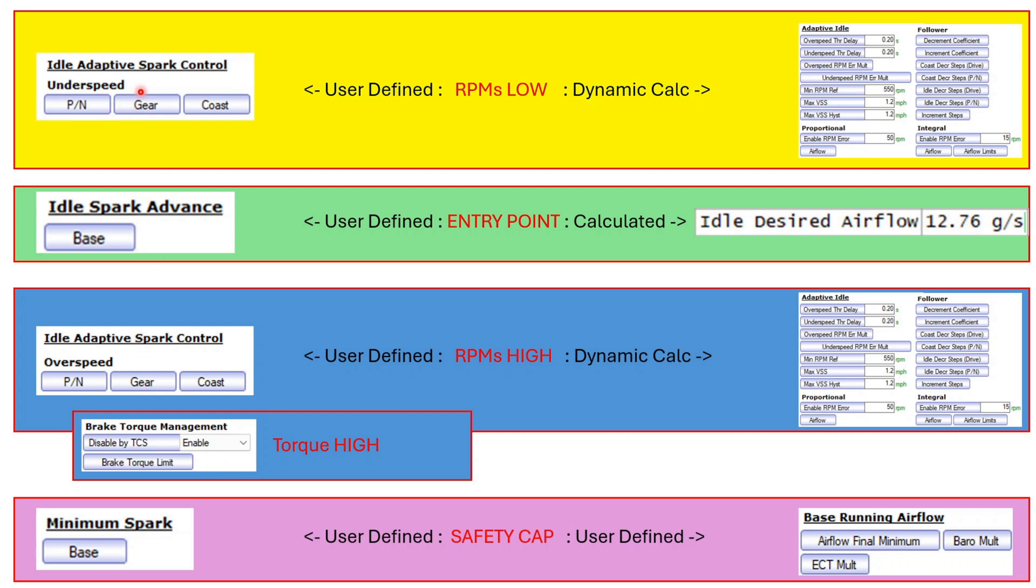But ideally all we're doing is we're hitting this underspeed and overspeed and kind of bouncing back and forth but hanging out right here at the idle spark advance, the base setting.